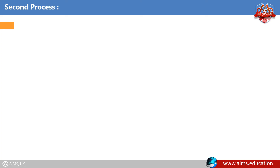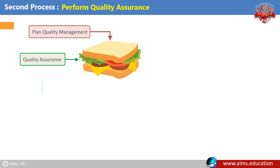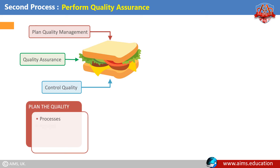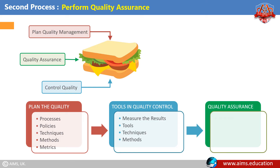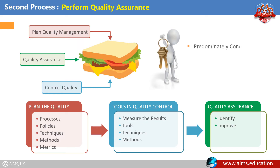Second process — Perform Quality Assurance: Quality Assurance is sandwiched between Plan Quality Management and Control Quality. First, you plan the quality processes, policies, techniques, methods, and metrics. Then, using the tools in Quality Control, you measure the results to see whether they comply with the identified metrics. Finally, in Quality Assurance, you identify whether the process is working and if there are ways to improve it. Key Benefit: Quality Assurance is predominantly concerned with improving processes and leads to improved results.